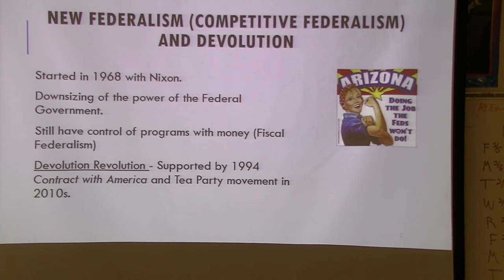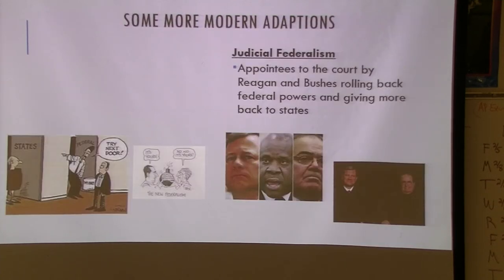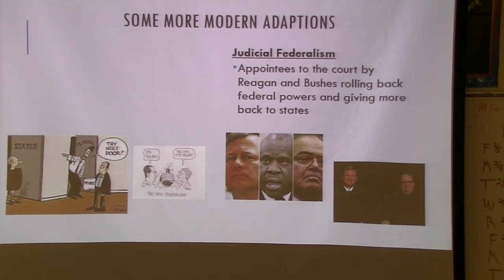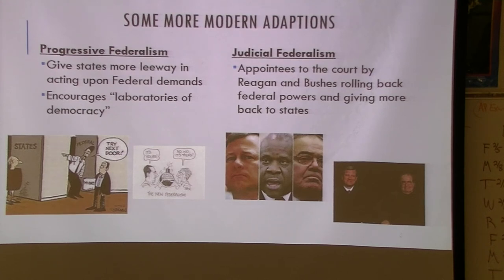Obamacare in the last 10 years has probably been the biggest example. Judicial federalism — talked about briefly in the last section — is where more things are done by courts and where courts have become more politicized. Reagan started appointing more conservative judges, and Obama did the same in the opposite direction.